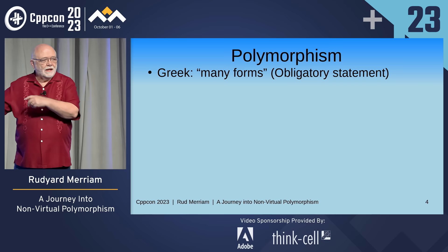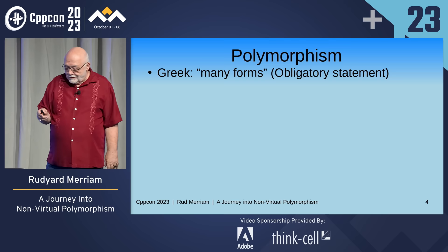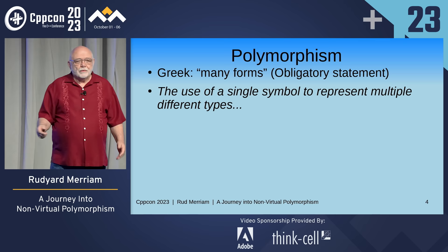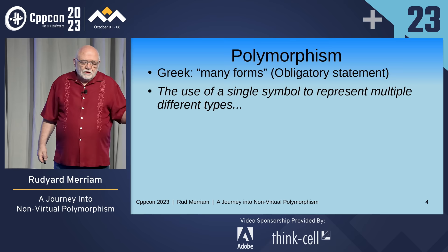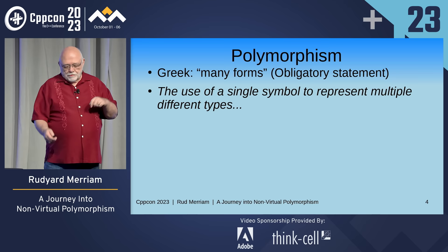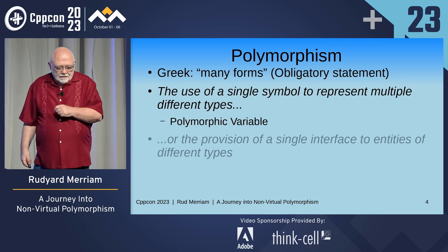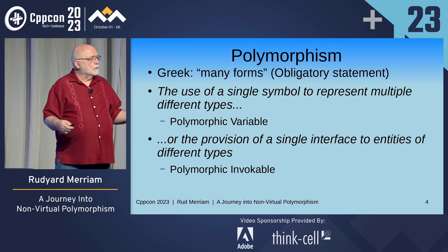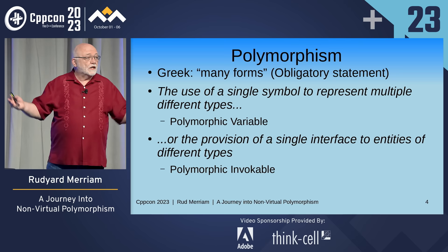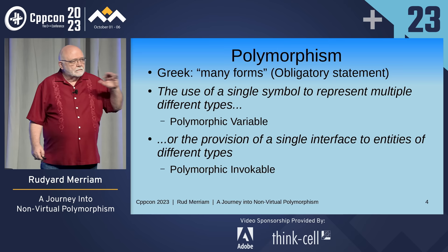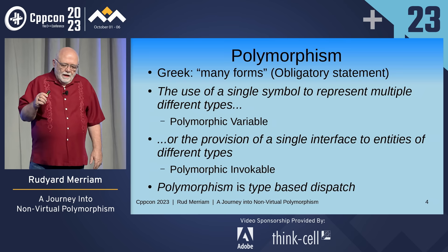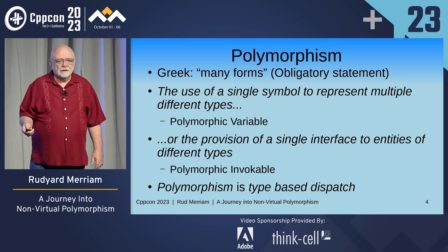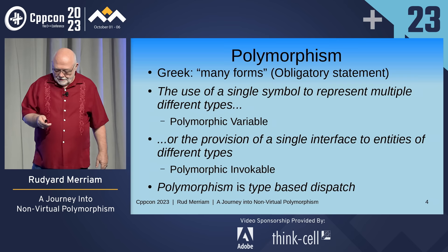Polymorphism is from the Greek meaning many forms — everybody seems to say that, it seems obligatory. A quote from Wikipedia, reversed a bit: the use of a single symbol to represent multiple different types — in other words, polymorphic variables. Or the provision of a single interface to entities of different types — polymorphic invocables, which we usually call functions, but in C++ we'll say invocable because there's more than functions we deal with. As I went through all this research, I decided that polymorphism is type-based dispatch. I'm not sure all experts would agree, but this seems to fit my mindset.